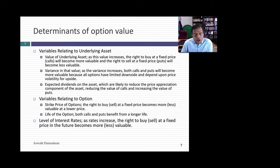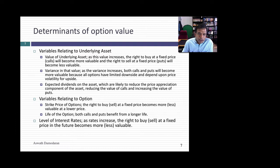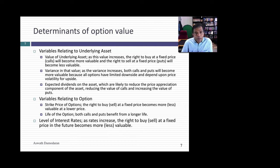As you look at these payoff diagrams you should start to see the variables that determine the value of an option. Three relate to the underlying asset. First, as the value of the underlying asset goes up and down, the value of all options — both calls and puts — will be affected. If the value goes up, call options get more valuable; put options get less valuable. The second variable is the variance in that value, and here's where options differ from any other asset. With bonds and stocks, more risk meant lower value. With options, as variance increases, both calls and puts become more valuable.